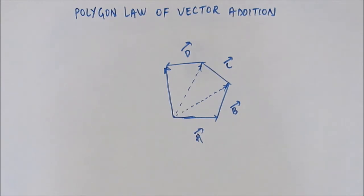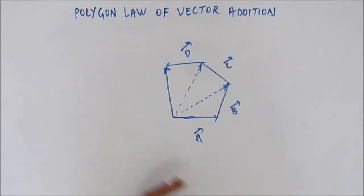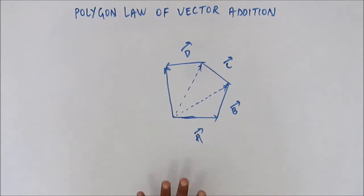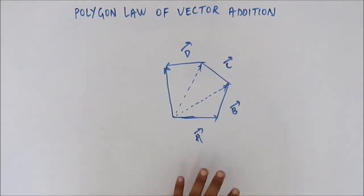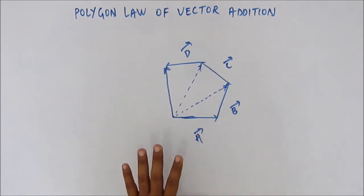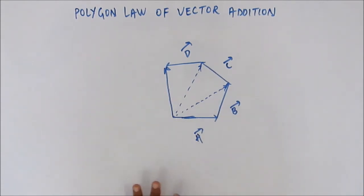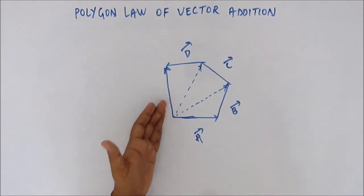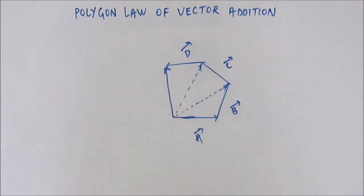It's nothing new — it comes directly from the triangular law of vector addition. But looking at it from the point of view of the polygon law sometimes makes things easier to see. The polygon law says: if there are n vectors taken in the same order forming n-1 sides of a polygon, then the resultant is the nth side taken in the reverse order.